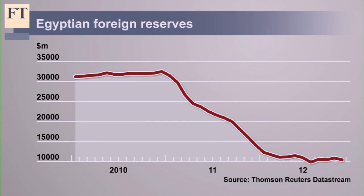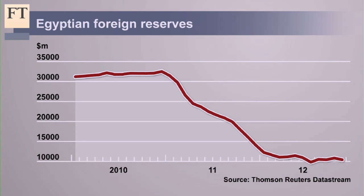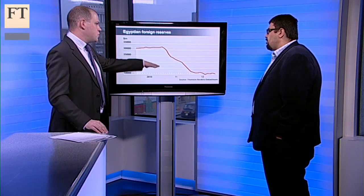This shows Egypt's foreign reserves, which have plummeted since 2010. You mentioned earlier the IMF — that's the $4.8 billion package. That's been delayed by a month, perhaps. That was looking crucial as unlocking other sources of funding. Is this getting towards a crisis point for Egypt?